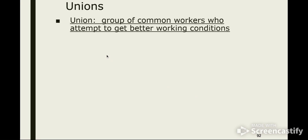The last topic in the Industrial Revolution is labor unions, and this is probably the one you know the least about. It's not that difficult to understand what a labor union is. A union is a group of common workers who attempt to get better working conditions. There are different unions for different jobs. For example, coal miners would join a coal mining union, while I would join the teachers union. They organize unions within different groups because not all workers have the same conditions.